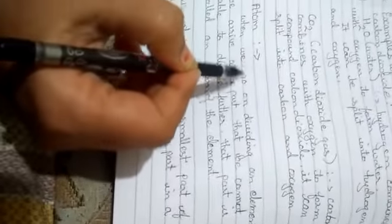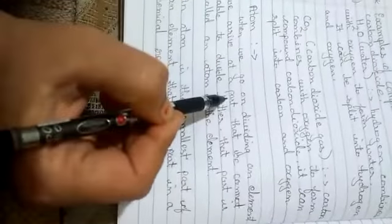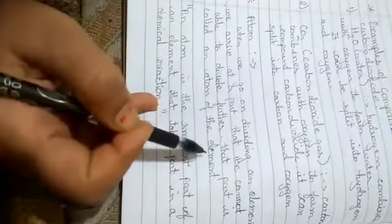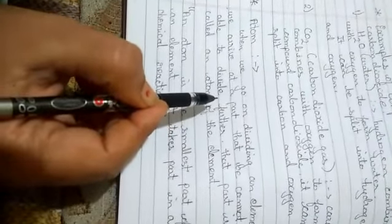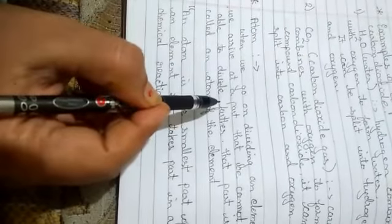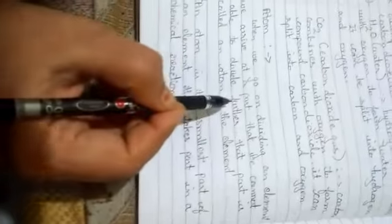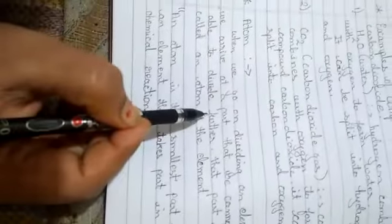Next point: atom. When we go on dividing an element, we arrive at a part that we cannot divide further. That part is called an atom of the element. It means when we are dividing an element, a time comes when we are unable to divide it more, and that part which we cannot divide is called an atom.